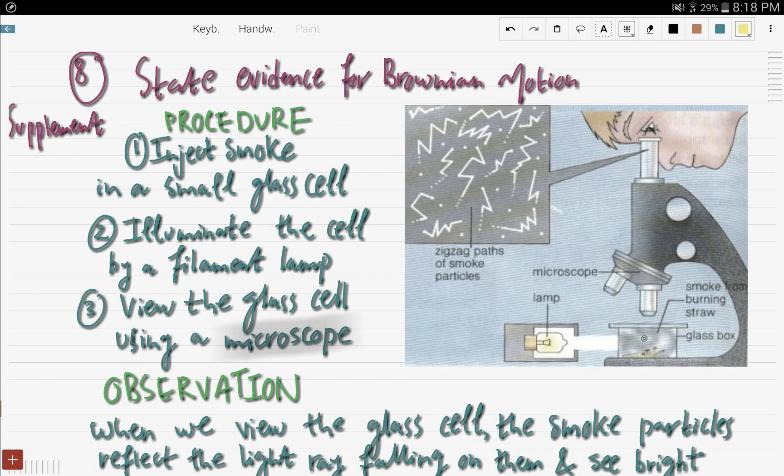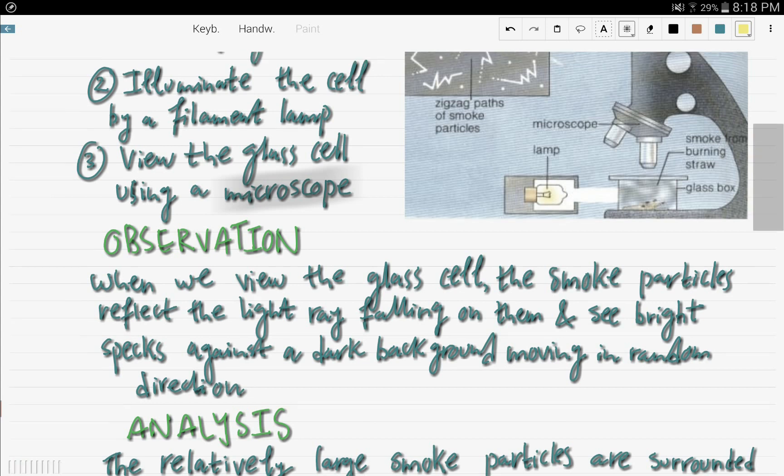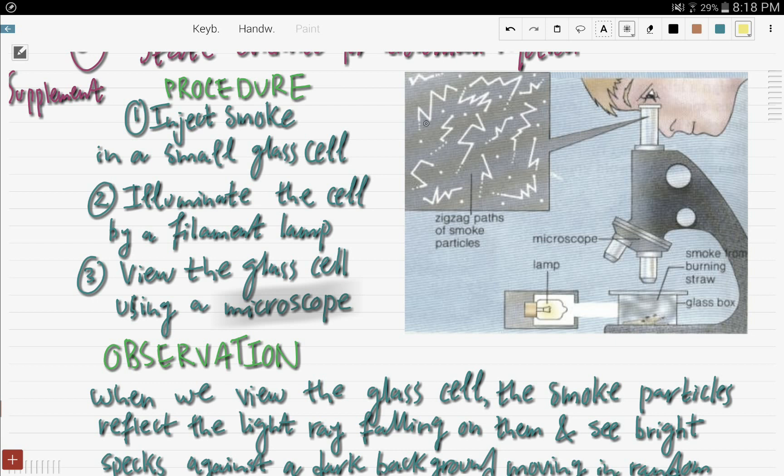So as you can see here, there is smoke from a burning straw in a glass cell. And then we illuminated the cell using a lamp, and then we viewed it through a microscope. So what's the observation that we will see? Is when we view the glass cell, the smoke particles reflect the light ray falling on them.